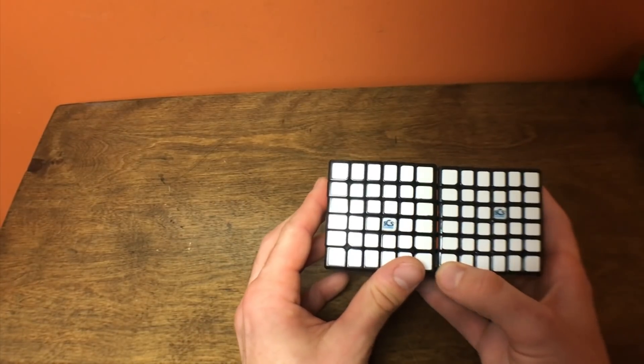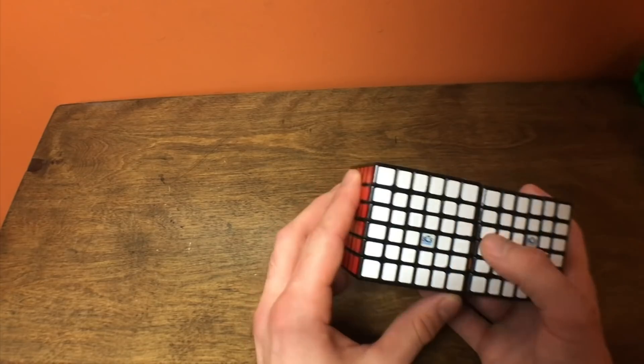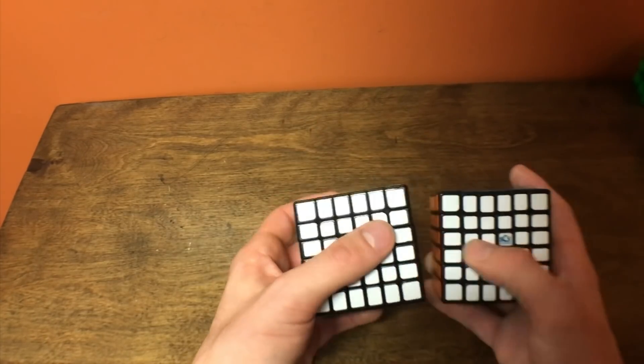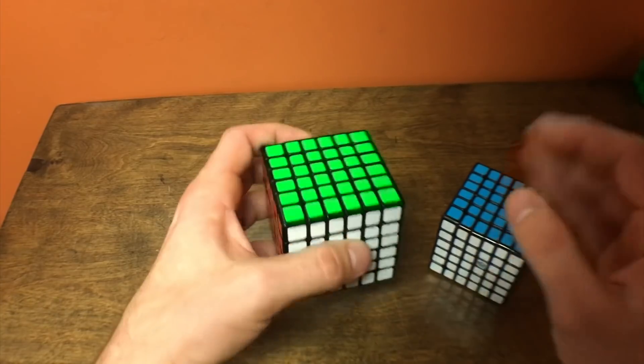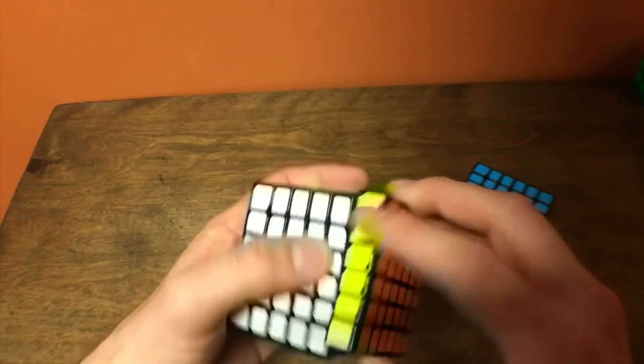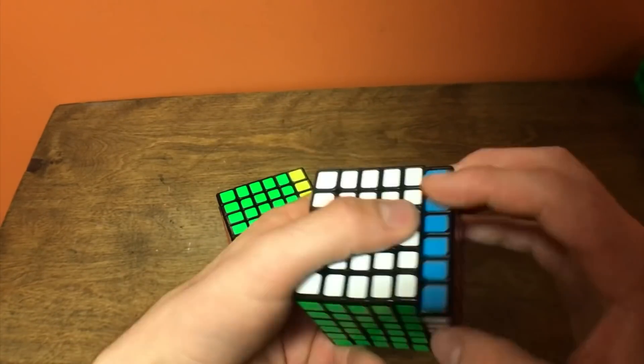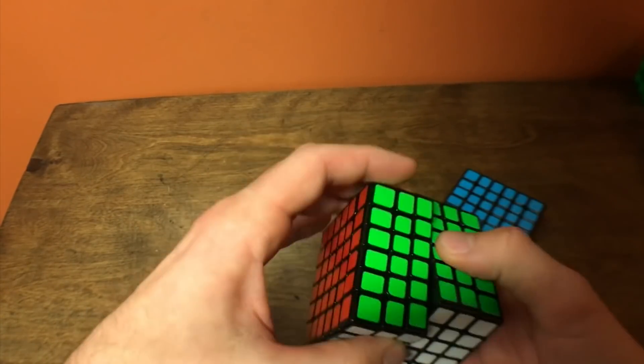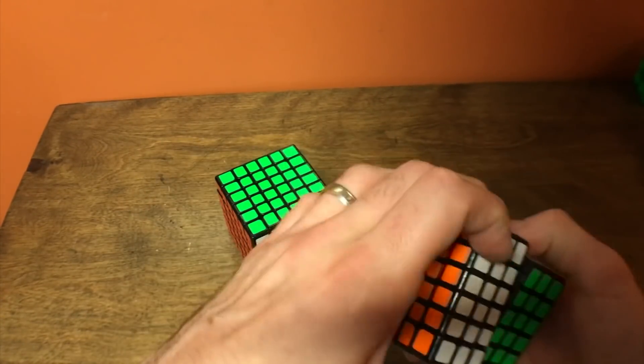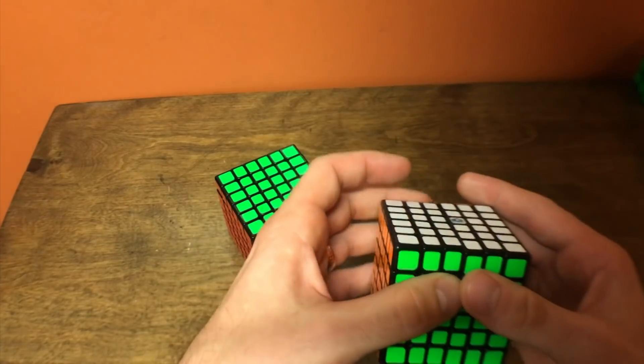The internals are pretty much the same size. It just seems like the external layers are a little bit bigger on the Wuhua. This one did have the Spring Swap, but the outside layers of the Wuhua are a bit faster than the Yushin Red. The inside layers feel a little bit more sluggish compared to the Yushin Red, so just a little bit of a trade-off there.